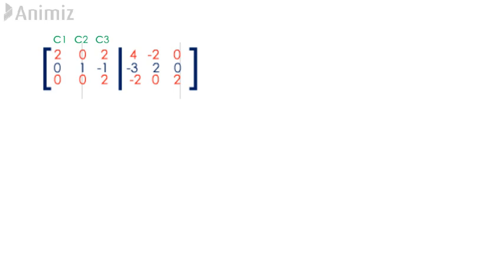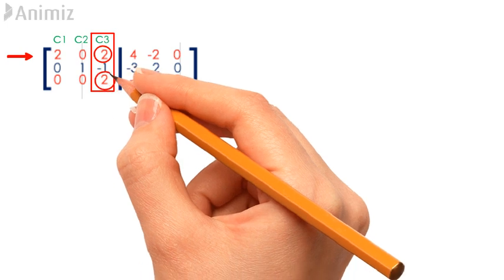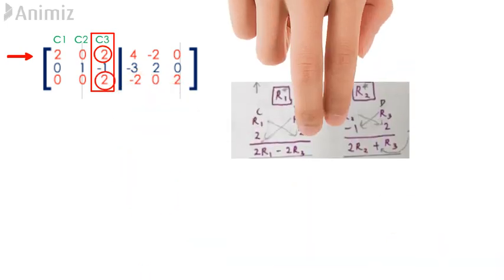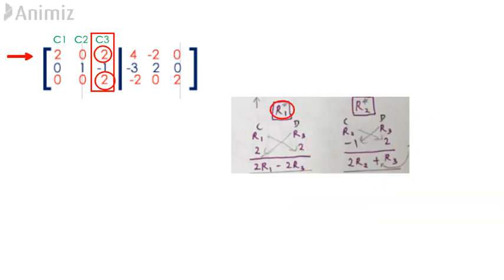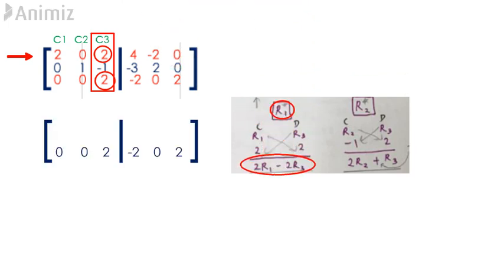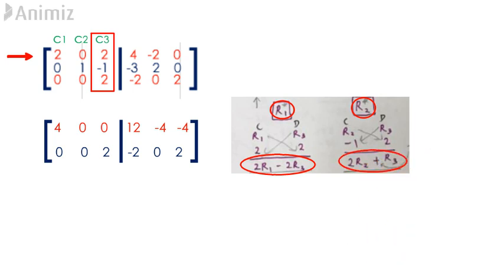Let's proceed to the third step by referring to column 3 of the matrix. Row 1 and row 2 contain the elements that will be changed. For row 1, the element to be changed is 2, whereas the diagonal element in this column is 2, which exists in row 3. Using the determinant formula AD minus BC, new row 1 equals 2R1 minus 2R3. The same procedure is repeated for row 2, giving new row 2 equals 2R2 plus R3.